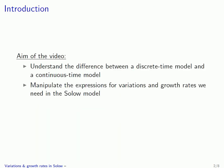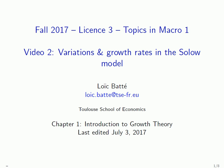So we have finally reached the end of this video. What I want you to take away is that there are subtle differences between the two types of models — the discrete time one and the continuous time one — and also how to manipulate the expressions for variations and growth rates in the Solow growth model in order to get to the law of motion of capital per worker. Thank you for your attention, and don't hesitate to ask me questions or make comments about this video either on Moodle or at the end of the lecture.